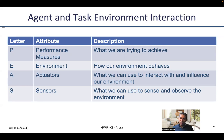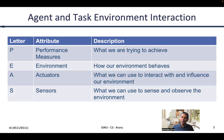What the agent is trying to do, we specify that as P for performance measures — what is the agent trying to achieve. E stands for environment, also called the task environment, which tries to specify how the environment behaves, and we'll dig a little deeper into that.